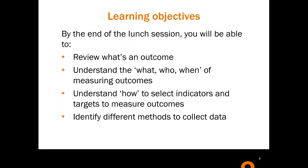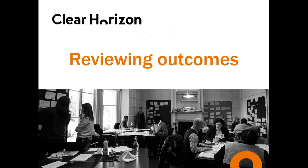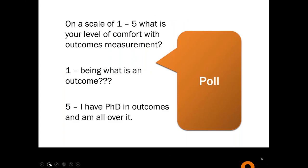Reviewing outcomes — let's start with this. On a scale of one to five, what is your level of comfort? One being 'what's an outcome?' and five being 'I have a PhD in outcomes and I'm all over it.' I'm going to put myself at about a four and a half. Everybody else? Ones and twos — at least some people are going to get something out of today's session.